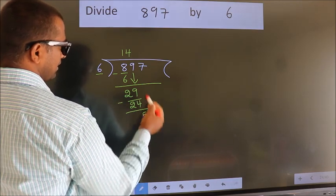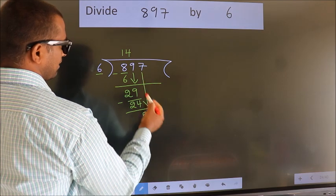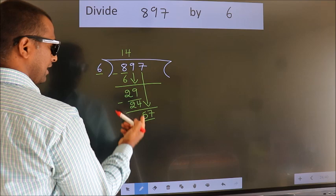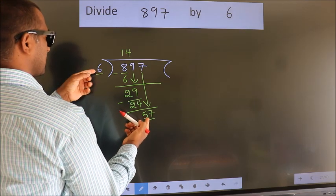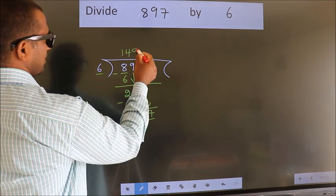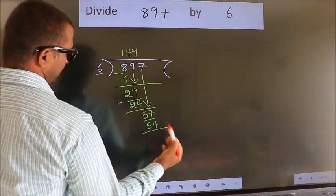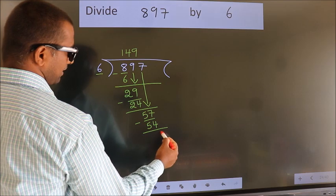After this, bring down the next number. So 7 down. So, 57. A number close to 57 in the 6 table is 6 times 9, which is 54. Now we subtract. We get 3.